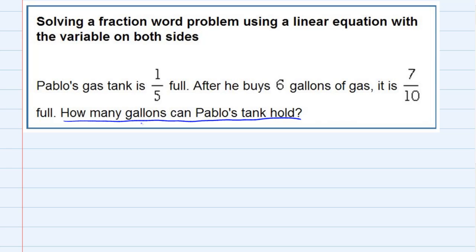We're trying to see how big the gas tank is on Pablo's car. We're gonna call that x because that's what we're looking for. Let's read back through the question and see what's going on. In the beginning it says that Pablo's tank is one-fifth full, so that means he currently has one-fifth of a tank, one-fifth times x.